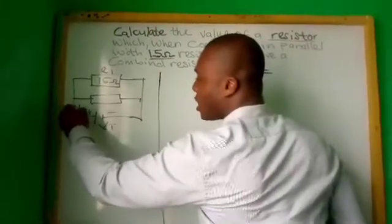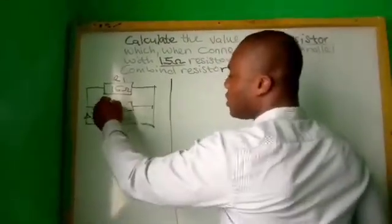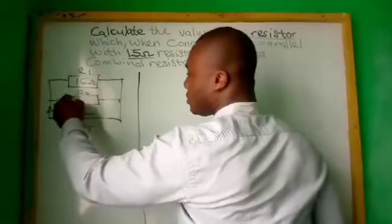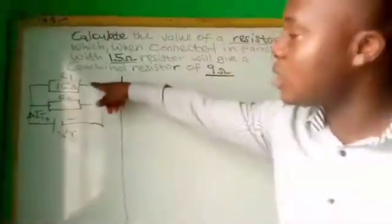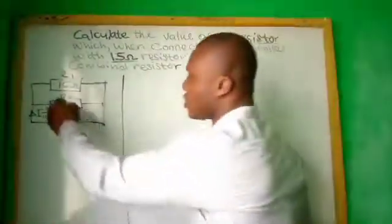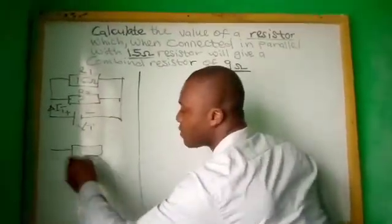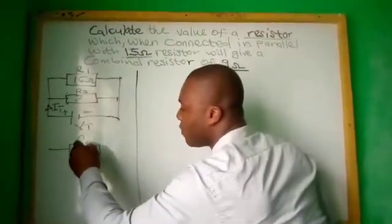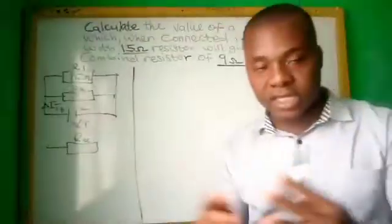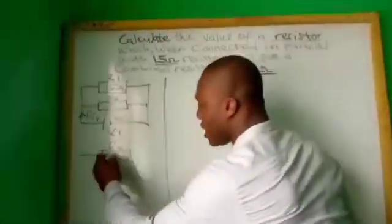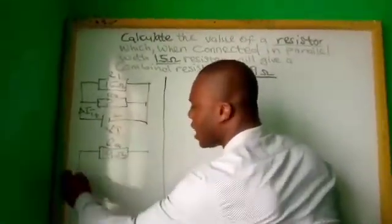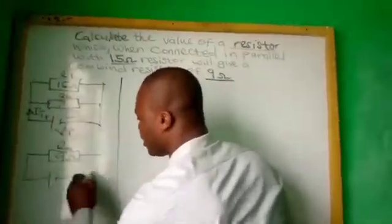This becomes our total current. There is a resistor connected to resistor 1 that will give you what? This one is unknown, that will give you an equivalent resistor. Equivalent means the total of it will give you 9 ohms.